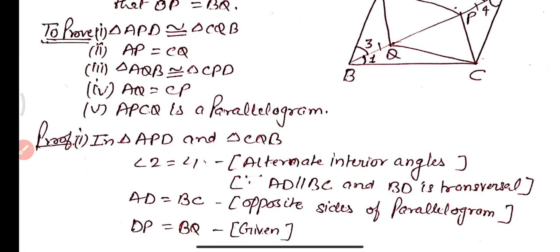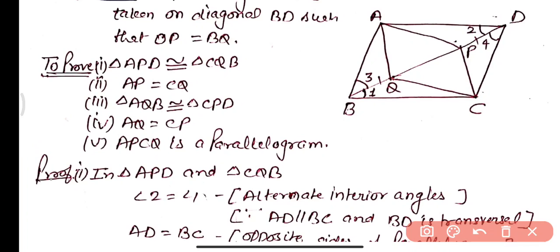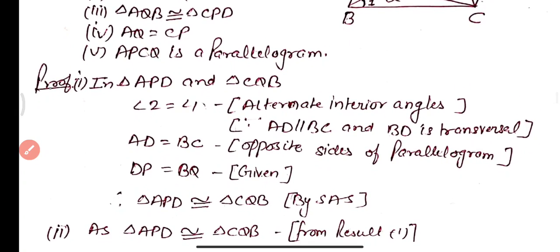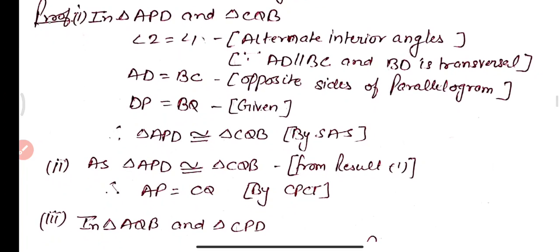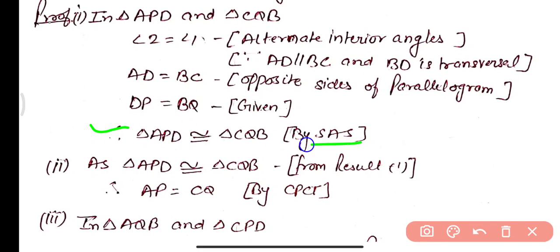Part 1: In triangles APD and CQB, ABCD is a parallelogram so opposite sides are equal and parallel. Since AD is parallel to BC with BD as transversal, angle 2 equals angle 1 as alternate interior angles. Also AD equals BC as opposite sides of a parallelogram, and DP equals BQ as given. Therefore triangle APD is congruent to triangle CQB by Side-Angle-Side congruency.